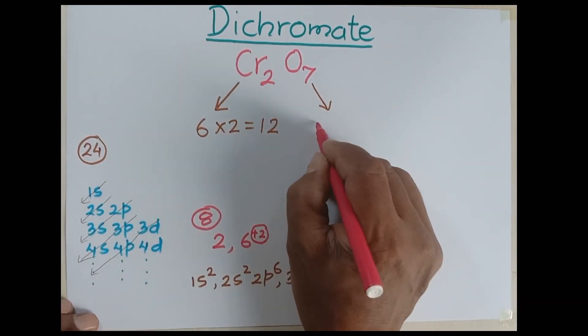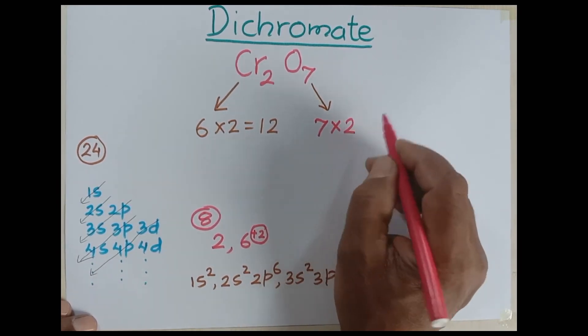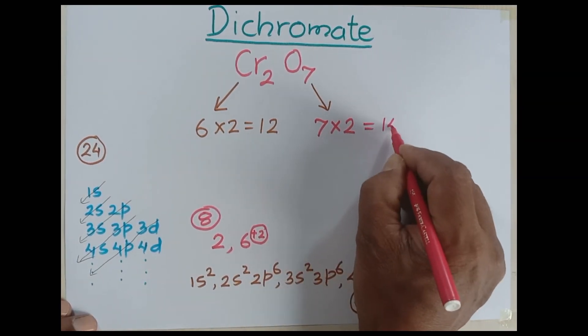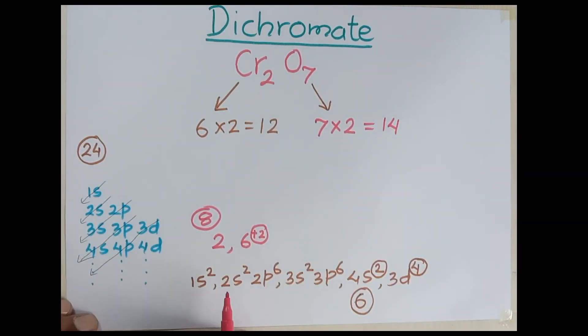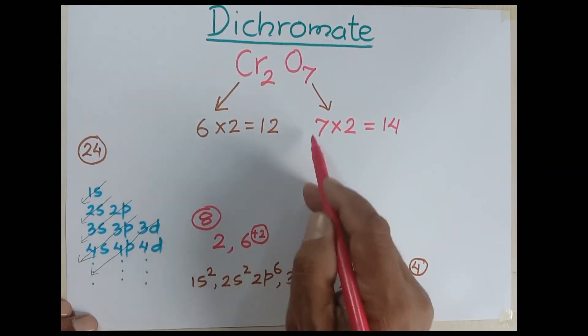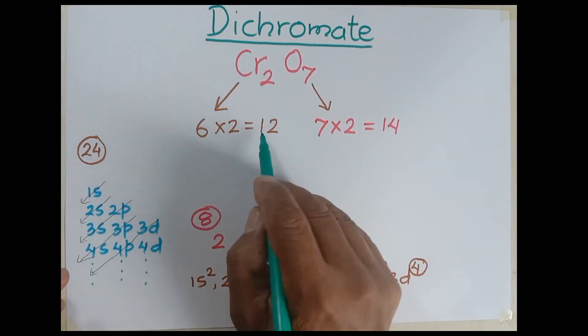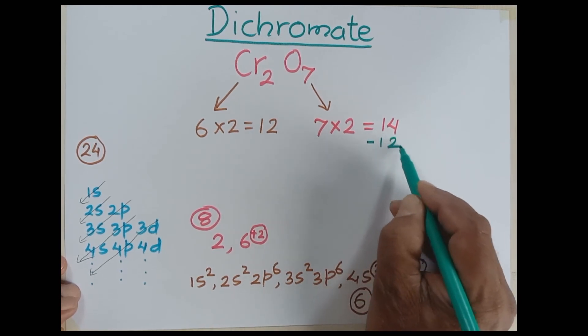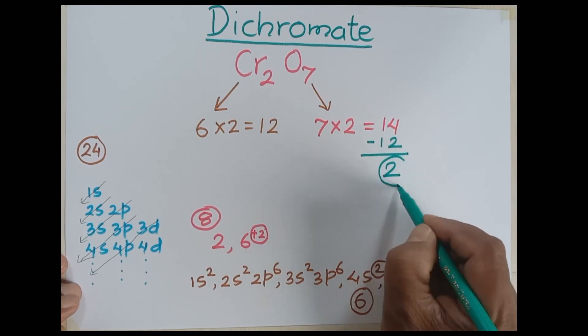There are seven oxygen atoms, each requiring two electrons to fulfill their outermost shell, which means altogether 14 electrons are needed. But here we have 12 extra electrons in the chromium. If chromium supplies 12 electrons to oxygen and we reduce these 12, then how many electrons are left? Two electrons are left, meaning two electrons are still required by dichromate to fulfill the outermost shells.